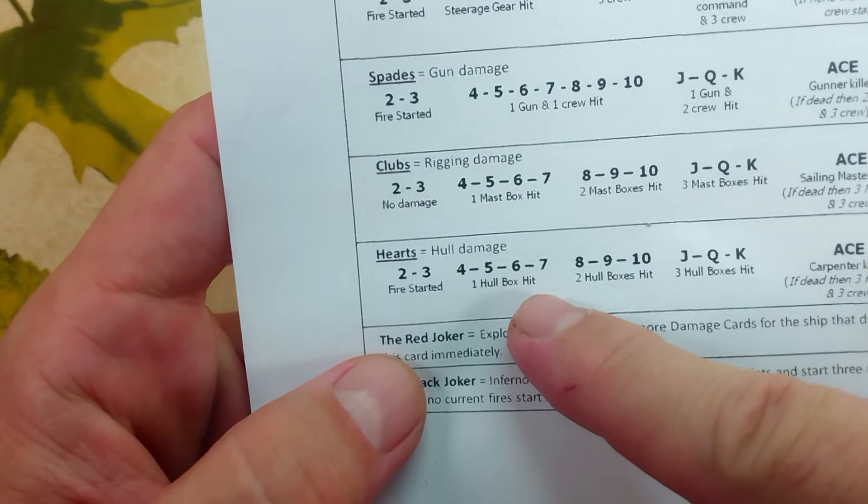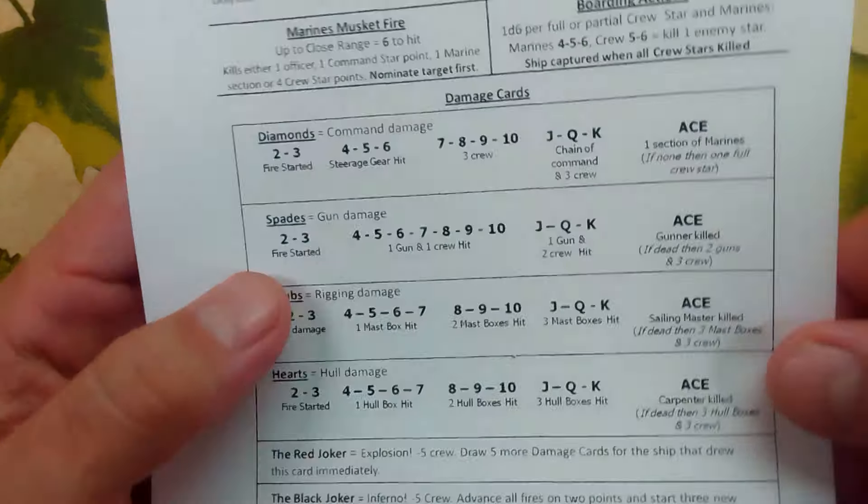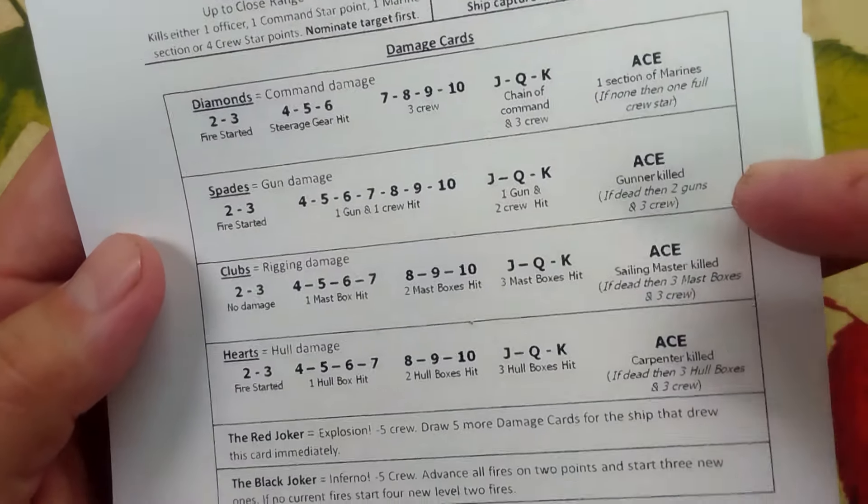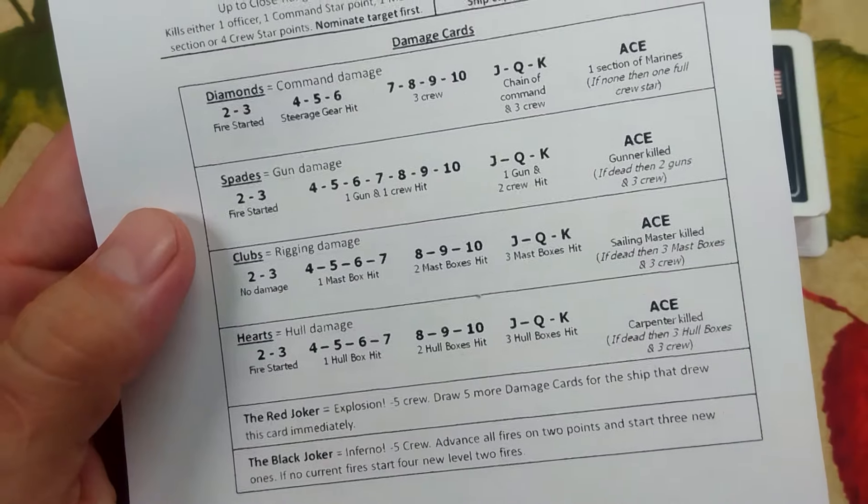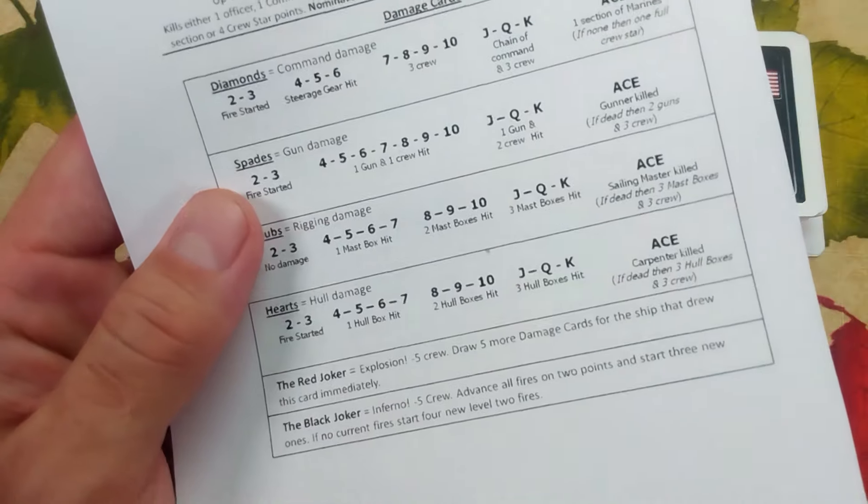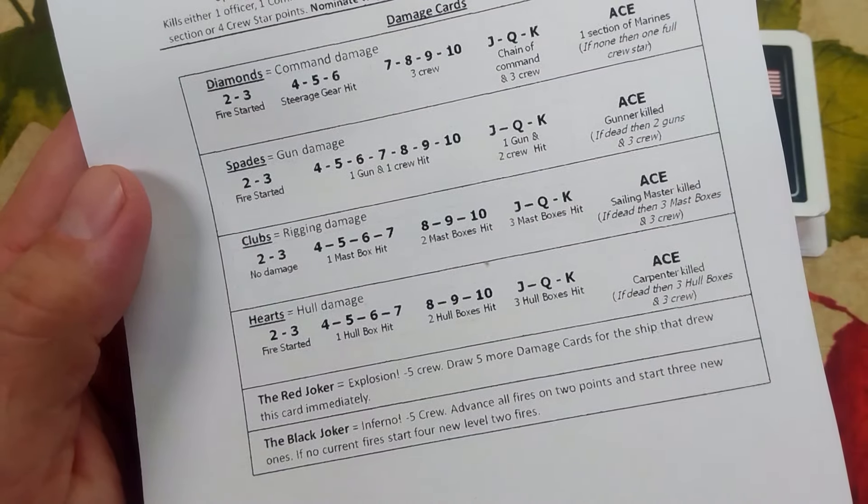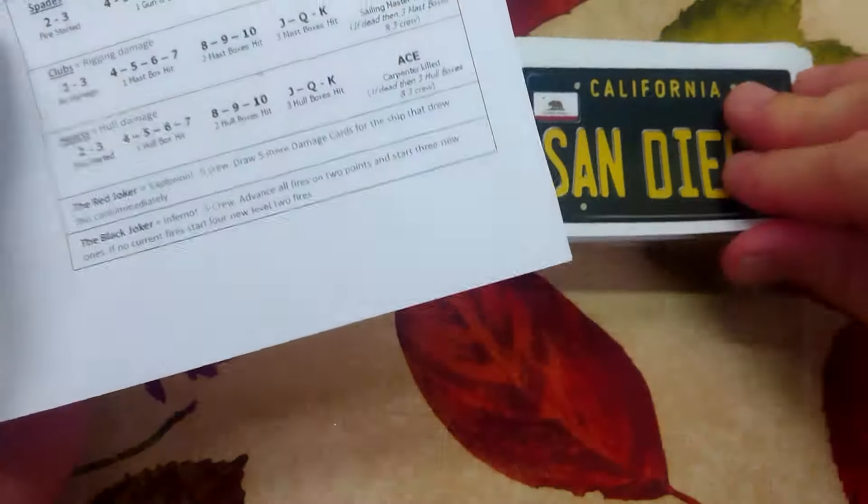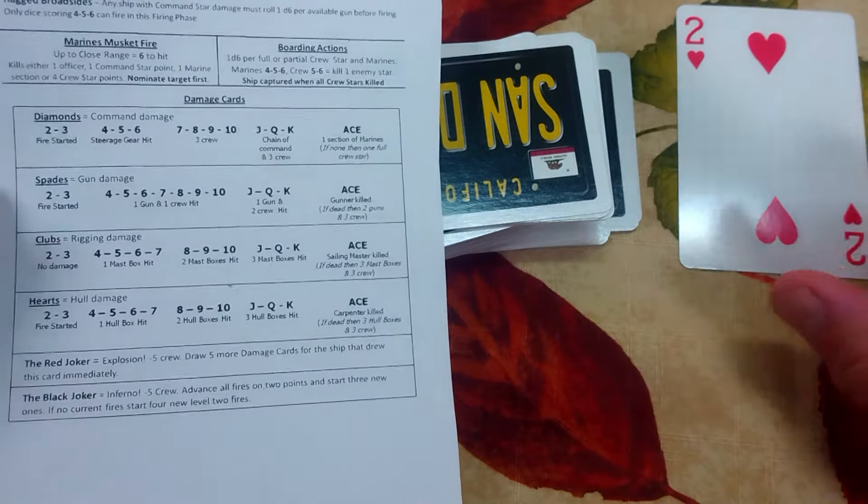Now we lose five crew. Draw five more damage cards. On the Black Joker, Inferno, advance all fires two points and start three new fires. If there are no current fires, start four at level one. So those Jokers, you're going to need to put out four fires. That's going to be a real problem. But let's take a look at what happens. So on the case of twos and threes, in all cases, a fire starts. In the case of four to seven, you lose one thing. So steerage, one gun and crew, one mast, and one hull box. The aces are terrifying. On the ace of spades, the gunner is killed. If the gunner is already dead, then two more guns and three crew are gone. On the clubs, the sailing master is killed. And in this case for the hearts, ace of hearts, the carpenter is killed. If he's dead, then three hull boxes and three crew.